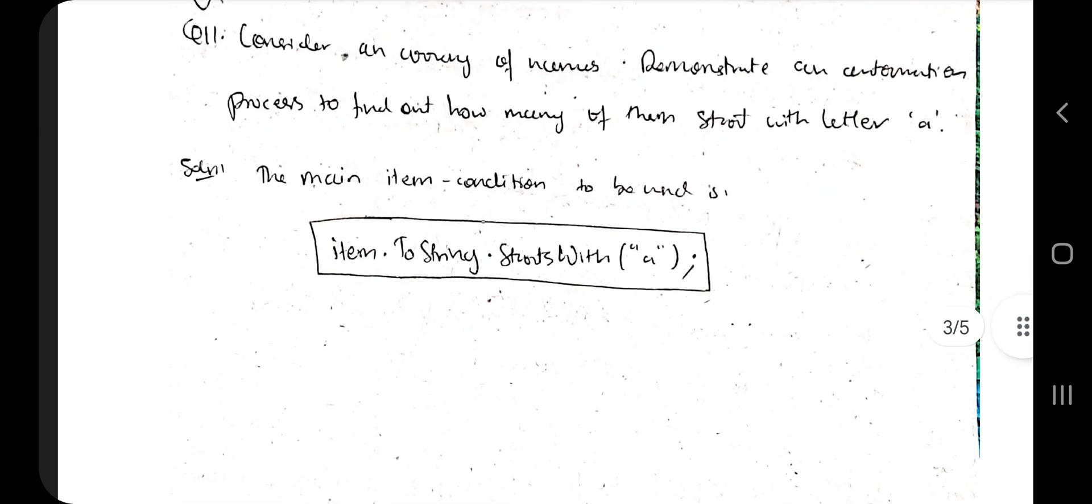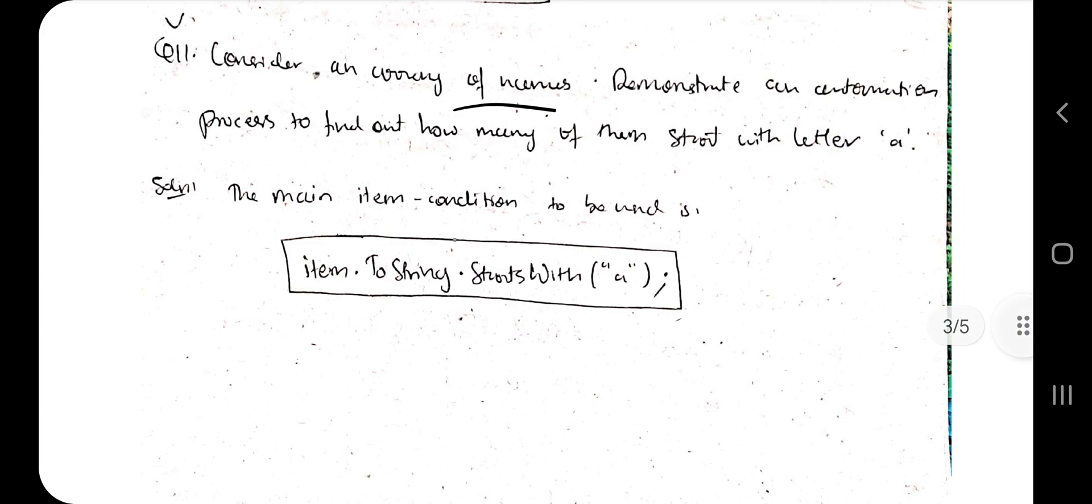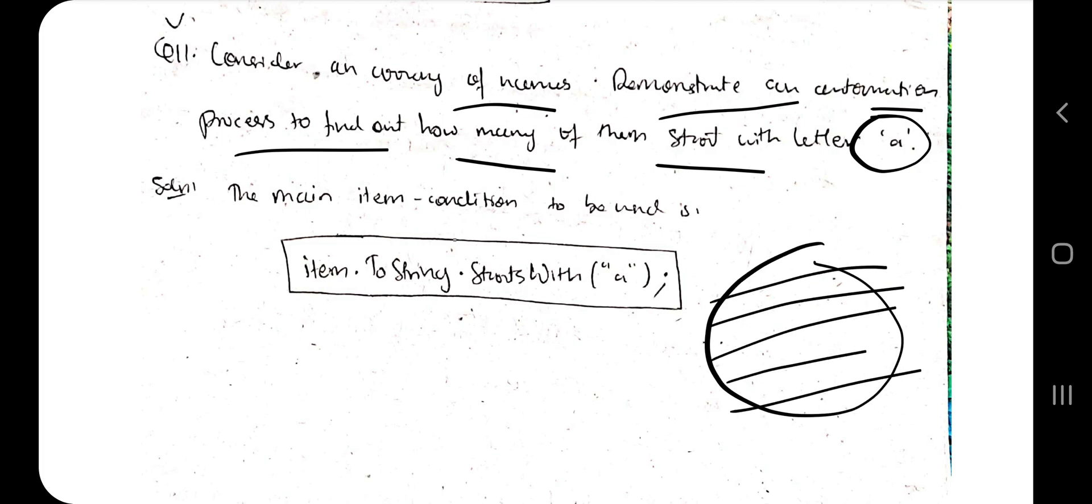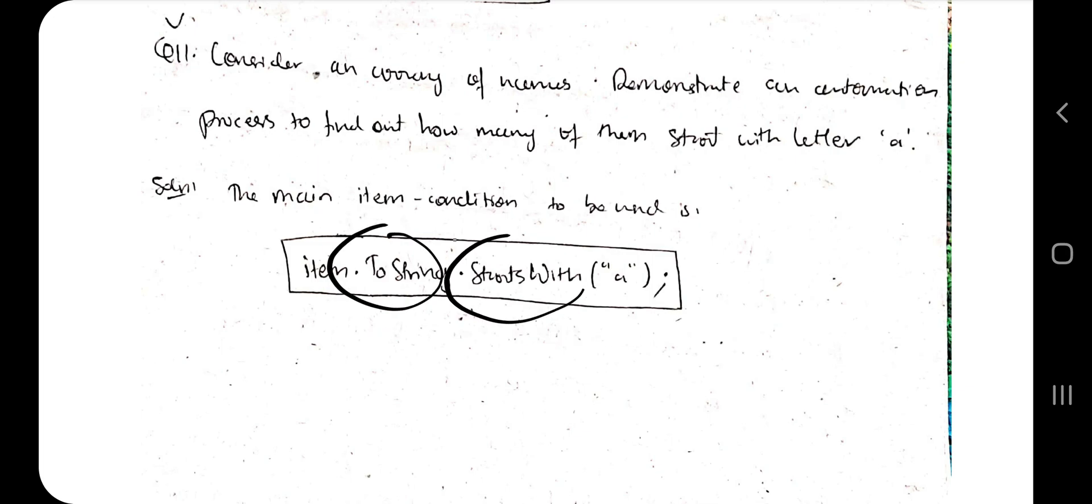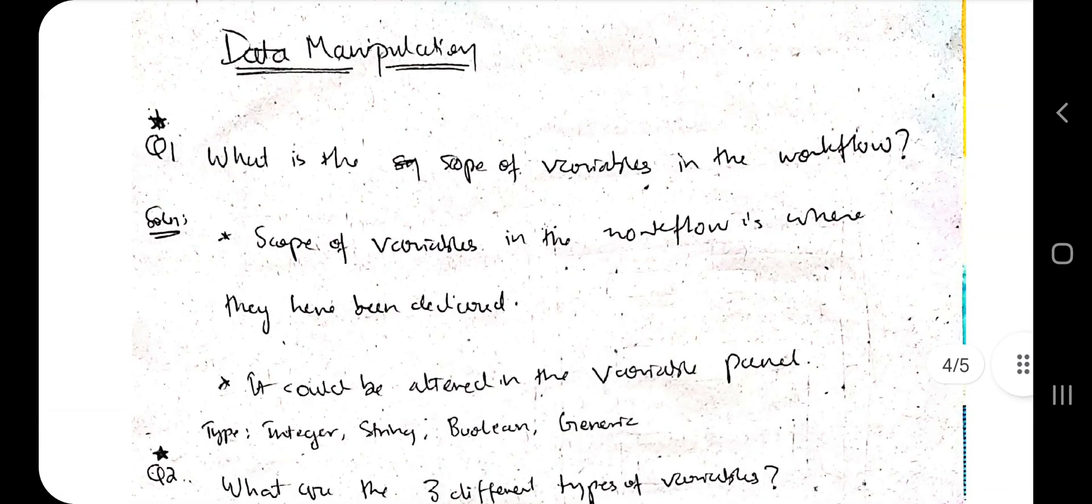Consider an array of names, demonstrate an automation process to find out how many of them start with the letter a. Given a number of names you have to create an array and store some names and output only those names which are starting with a. For that, this is the main thing which you will be writing in the condition part: item.toString().startsWith('a'). If this is true you will be outputting the name, else you will be just moving on. These are super important questions from exam point of view, so don't miss at any cost.